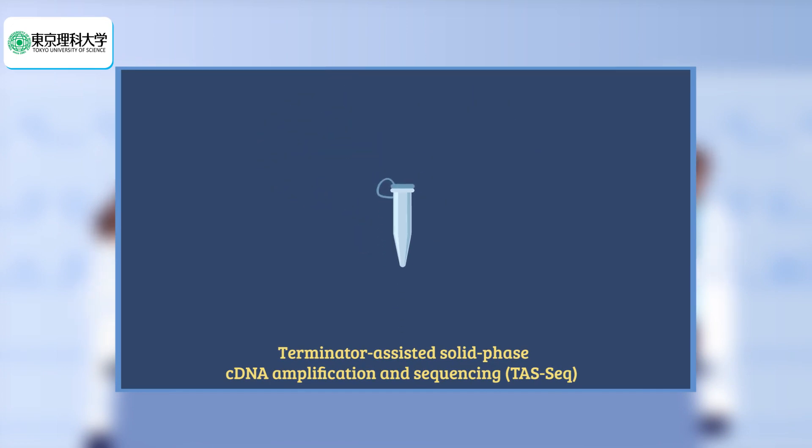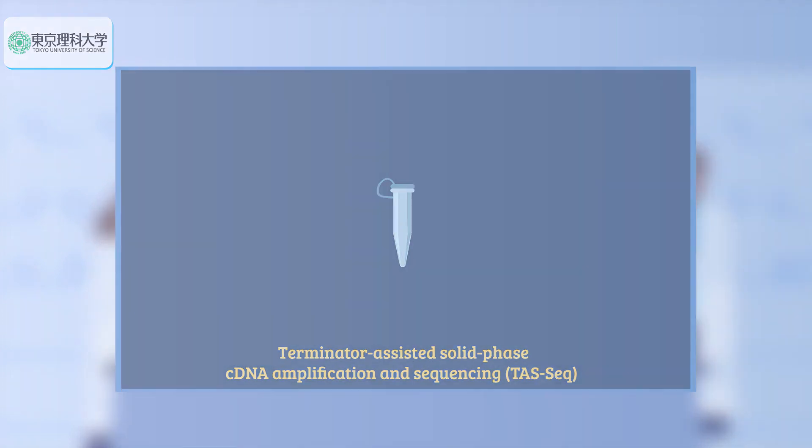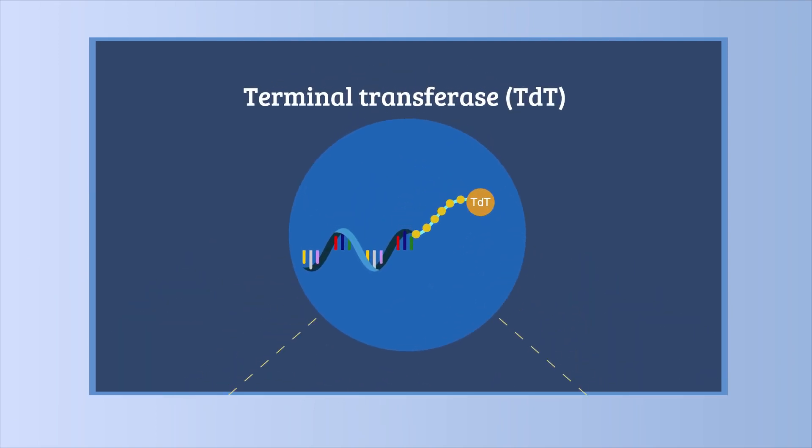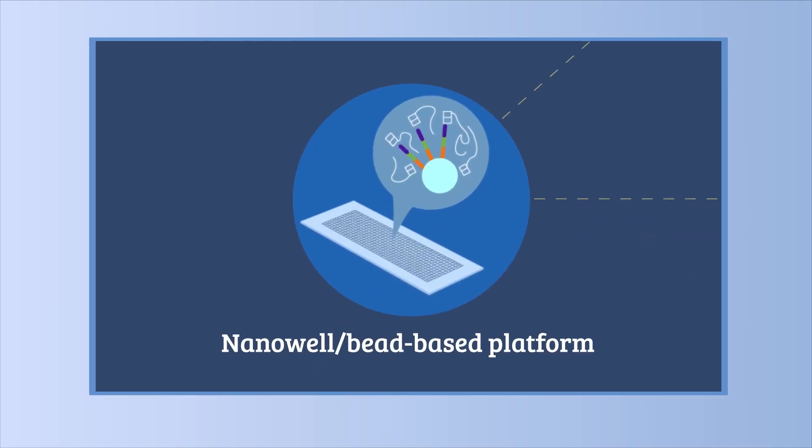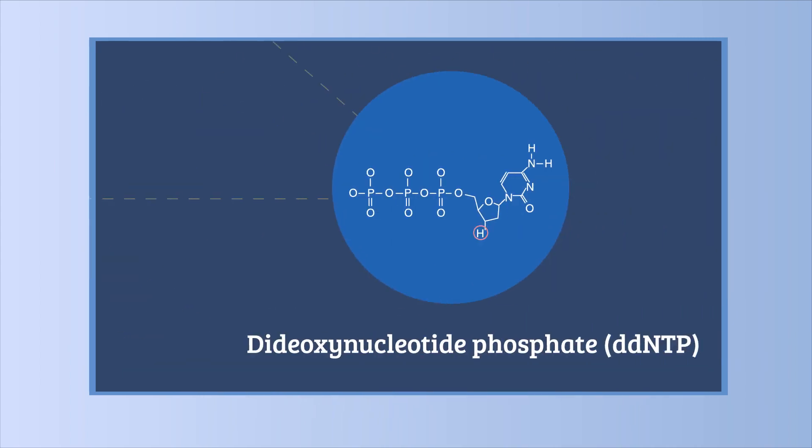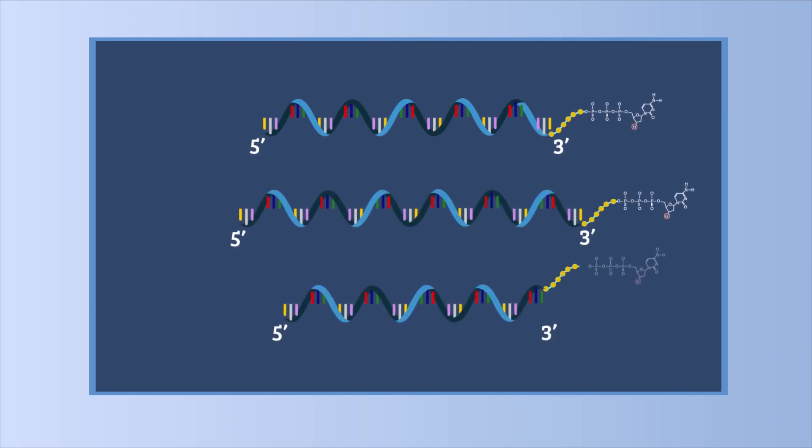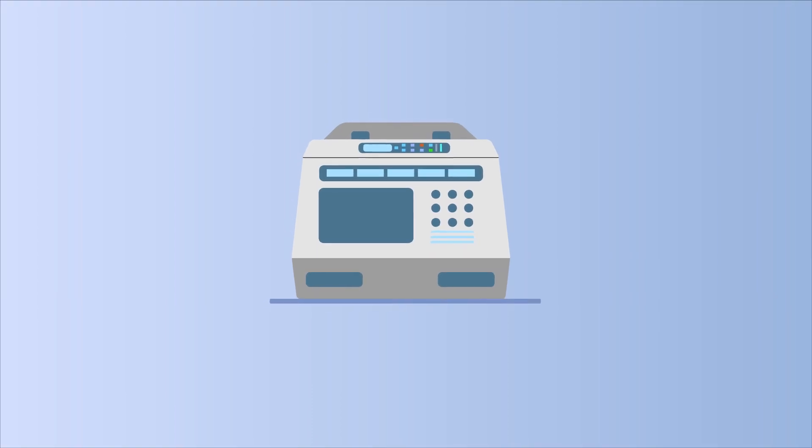TAS-seq uses a template-independent enzyme terminal transferase, TDT, for efficient cDNA amplification, a nanowell bead-based scRNA-seq platform for improved cell isolation, and a dideoxynucleotide phosphate, DDNTP, terminator that helps stochastically terminate the TDT reaction and reduce variations and handling difficulties.